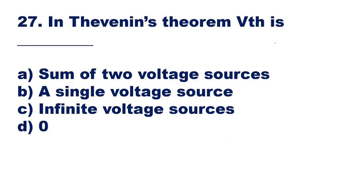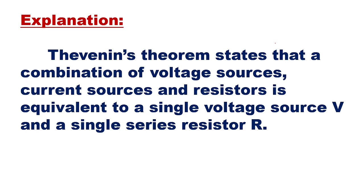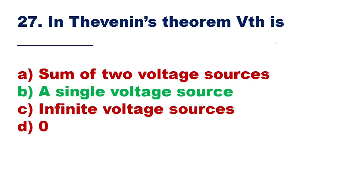Question 27: In Thevenin's theorem, VTH is — a sum of two voltage sources, a single voltage source, infinite, or zero. In Thevenin's equivalent circuit, we have a voltage source in series with a resistance, so VTH is a single voltage source. Option B is the right answer. Thevenin's theorem states a combination of sources and resistors is equivalent to a single voltage source V and single resistor R.